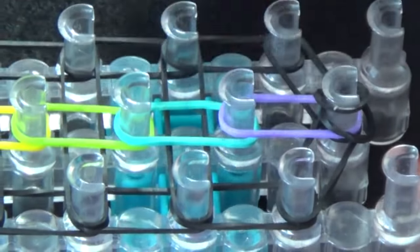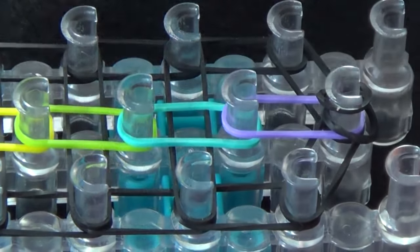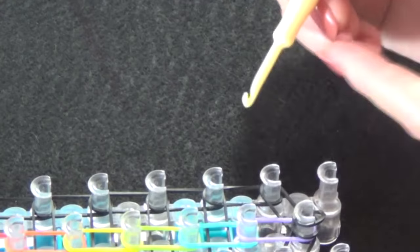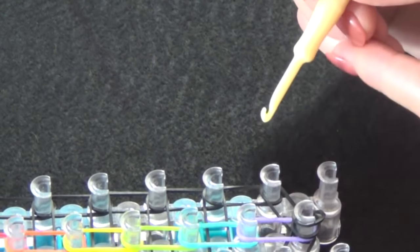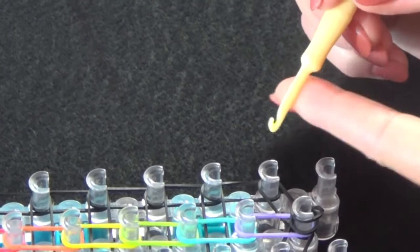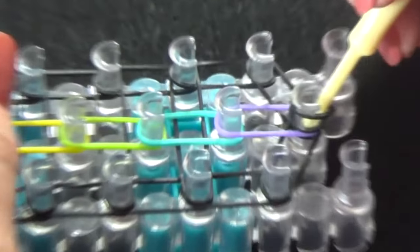Now we're going to loop this center row of bands. With your hook pointing away from you, use this flat side of the hook to pull your cap band away.